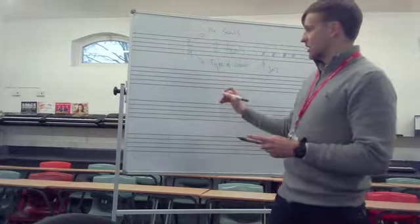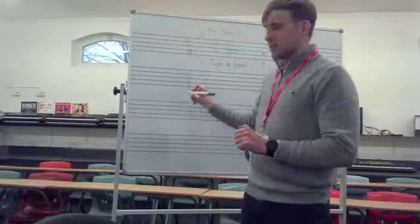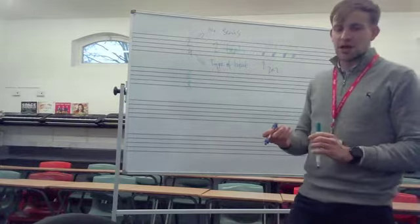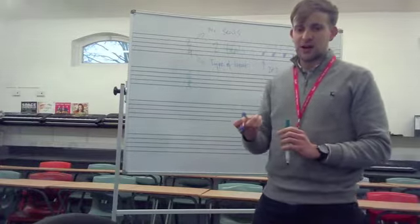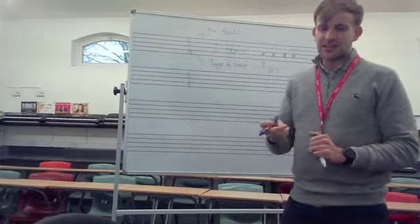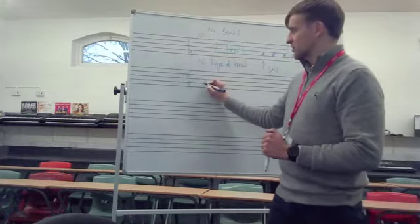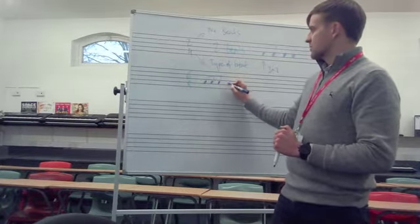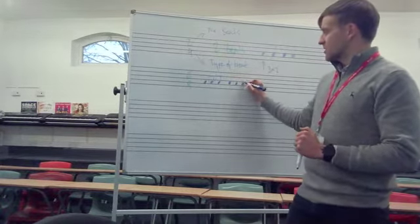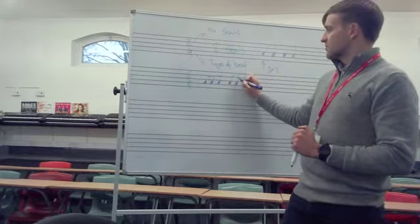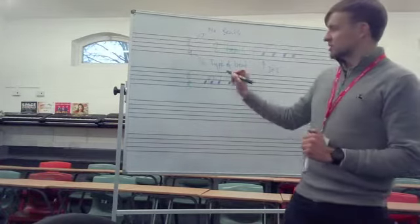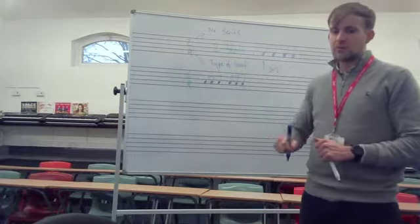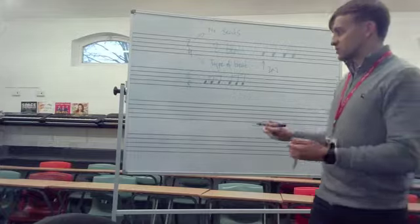Now, the six-eight bars in that piece are what we call compound time. This gets a little bit tricky. Compound time is where we divide one beat into three quavers instead of two. One beat is divided three times instead of two times. So, six-eight doesn't mean six beats in a bar. It means six quavers in a bar. But the six is divided into two, two sets of three.